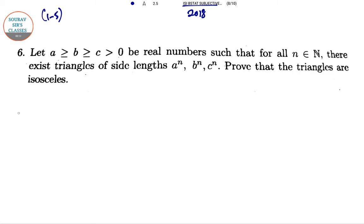So let's do the next one. Let a ≥ b ≥ c > 0 be real numbers such that for all n ∈ ℕ, there exist triangles of side lengths a^n, b^n, c^n. Prove that the triangles are isosceles.